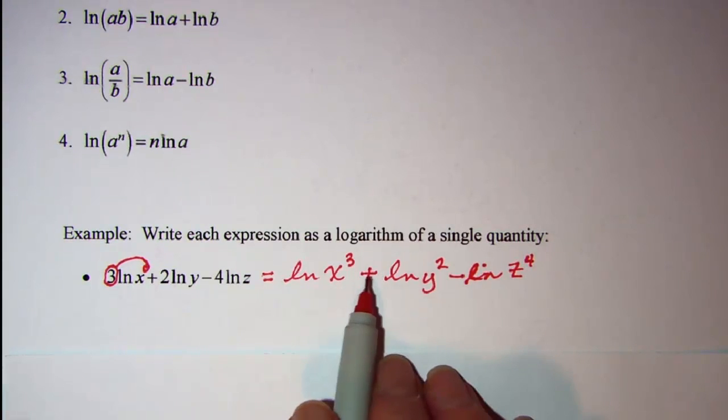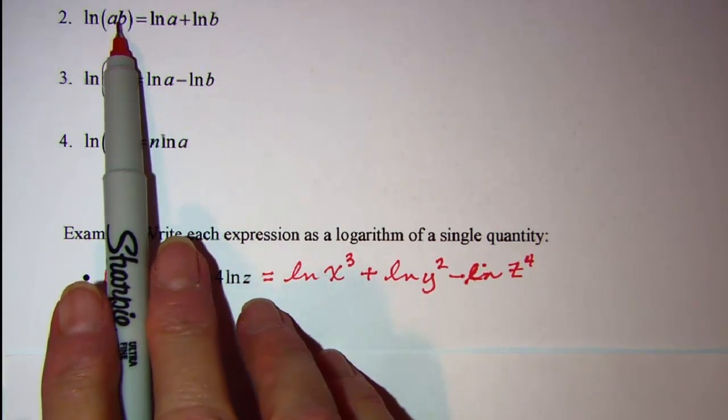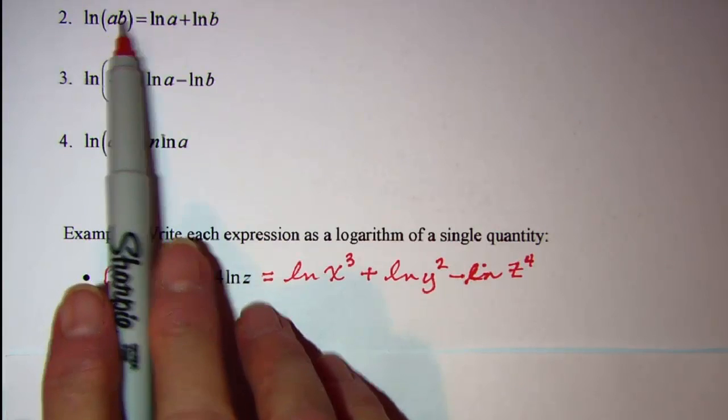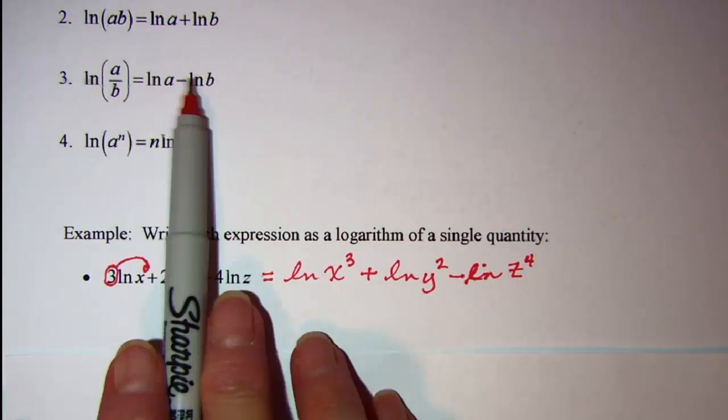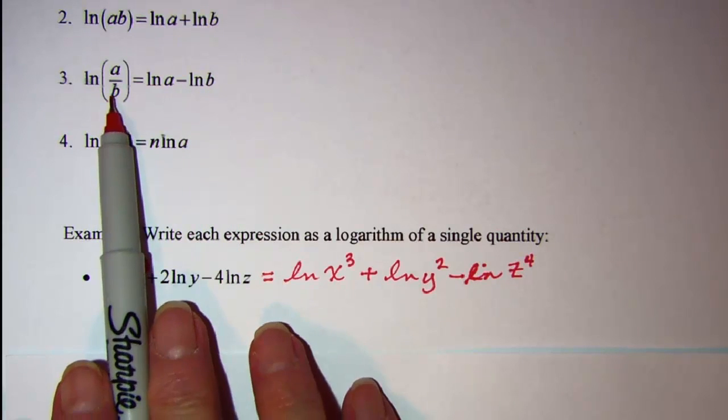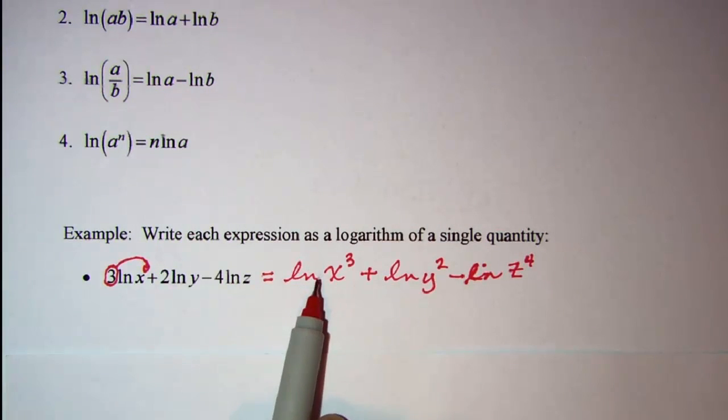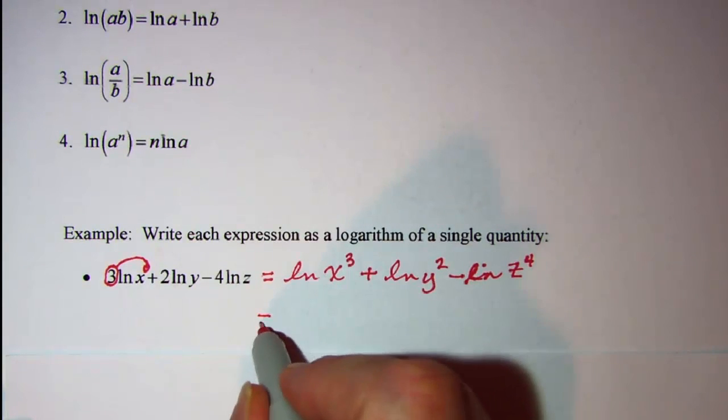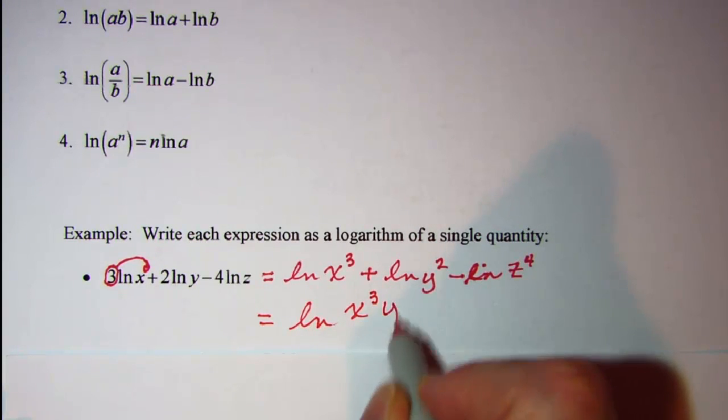Then, when we have logarithms added together, that's the same as the single logarithm of the product of those arguments. And then, when we have a difference, that's like dividing by this argument would be the denominator of the fraction. So our first two terms, we can write that as the product of the arguments, x cubed times y squared.